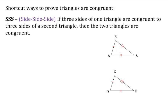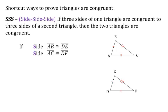The first way to prove it is by SSS, which stands for side, side, side. That says if three sides of one triangle are congruent to three sides of a second triangle, then the two triangles are congruent. Looking at the two triangles on the screen: side AB is congruent to side DE, side AC is congruent to side DF, and side BC is congruent to side EF. So we have side, side, side — meaning triangle ABC is congruent to triangle DEF.